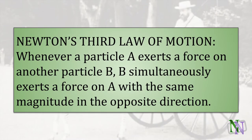Here is Newton's Third Law of Motion. It says whenever a particle A exerts a force on another particle B, B simultaneously exerts a force on A with the same magnitude in the opposite direction. This is often paraphrased as: for every action there is an equal and opposite reaction. That is true, but we must be clear in understanding what the law means in practice.